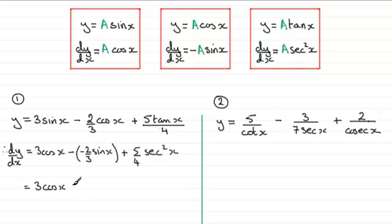We've got minus minus, which is plus, so I have 2/3 sine x, or 2 sine x over 3. For this term, I have 5/4 sec squared x, or 5 sec squared x over 4.